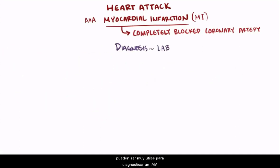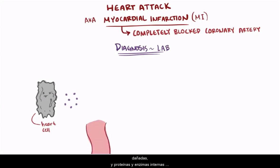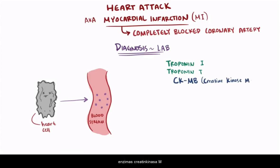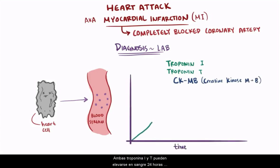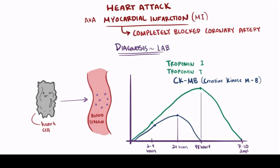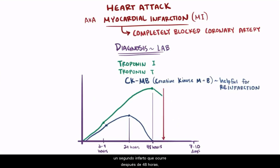In addition to an ECG, labs can be very useful in diagnosing an MI. When there's been irreversible damage to heart cells, their membranes become damaged and the proteins and enzymes inside escape and enter the bloodstream. Three key ones are troponin I, troponin T, and CKMB, which is a combination of creatine kinase enzymes M and B. Both troponin I and T levels can be elevated in the blood within 2–4 hours after infarction, usually peaking around 48 hours, but staying elevated for 7–10 days. CKMB starts to rise 2–4 hours after infarction, peaks around 24 hours, and returns to normal after 48 hours. Since CKMB returns to normal more quickly, it can be useful to diagnose re-infarction — a second infarction that happens after 48 hours but before troponin levels go back to normal.